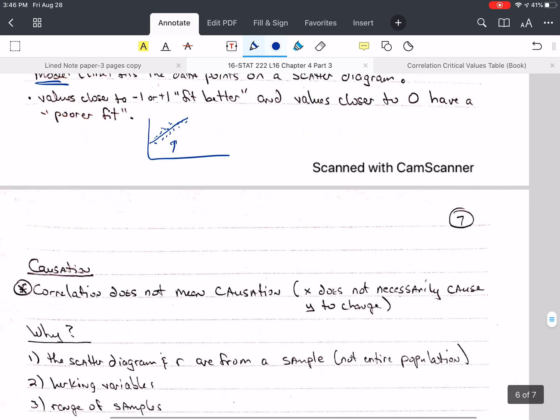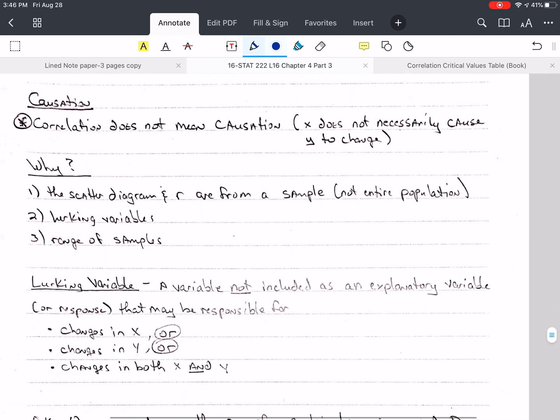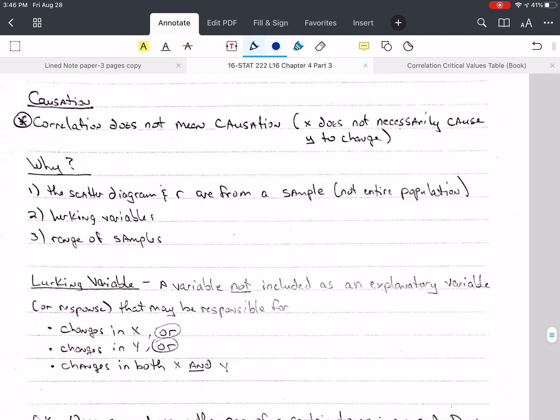The closer R is to 0, the more spread out those data points are from the line. Now we have to be very careful when we're doing a correlation. Correlation does not mean causation. We cannot say that X causes Y. It may be true. It may not be true.